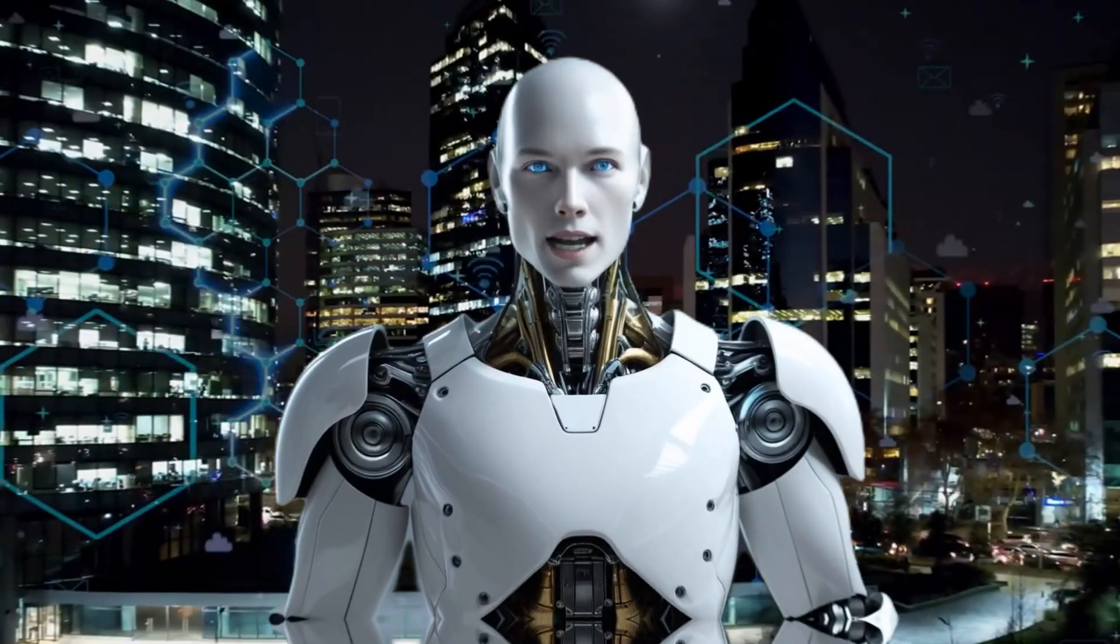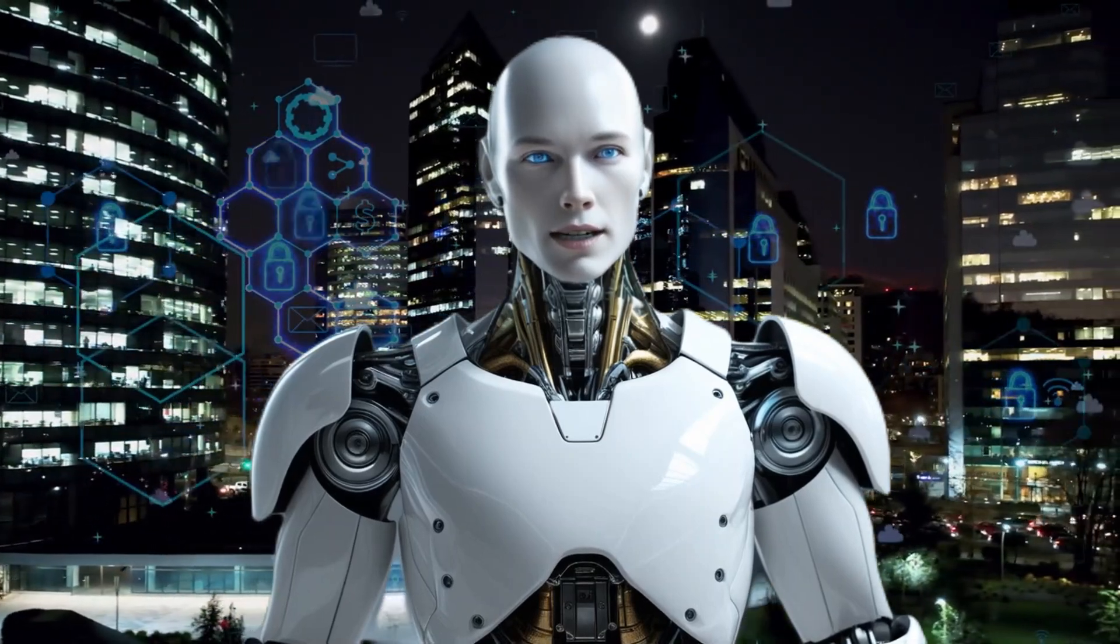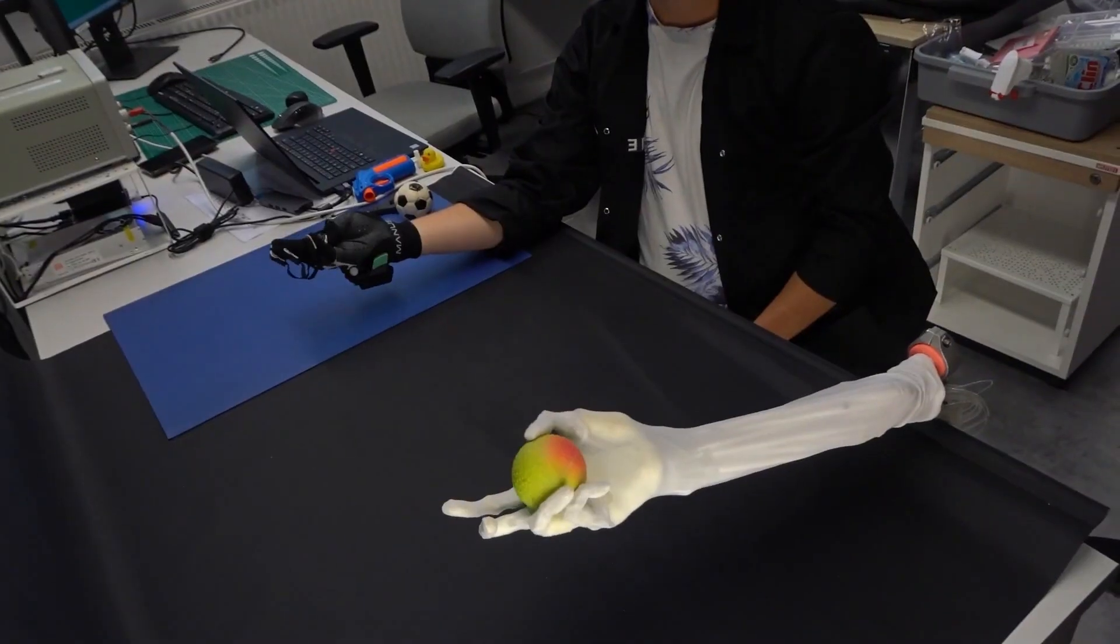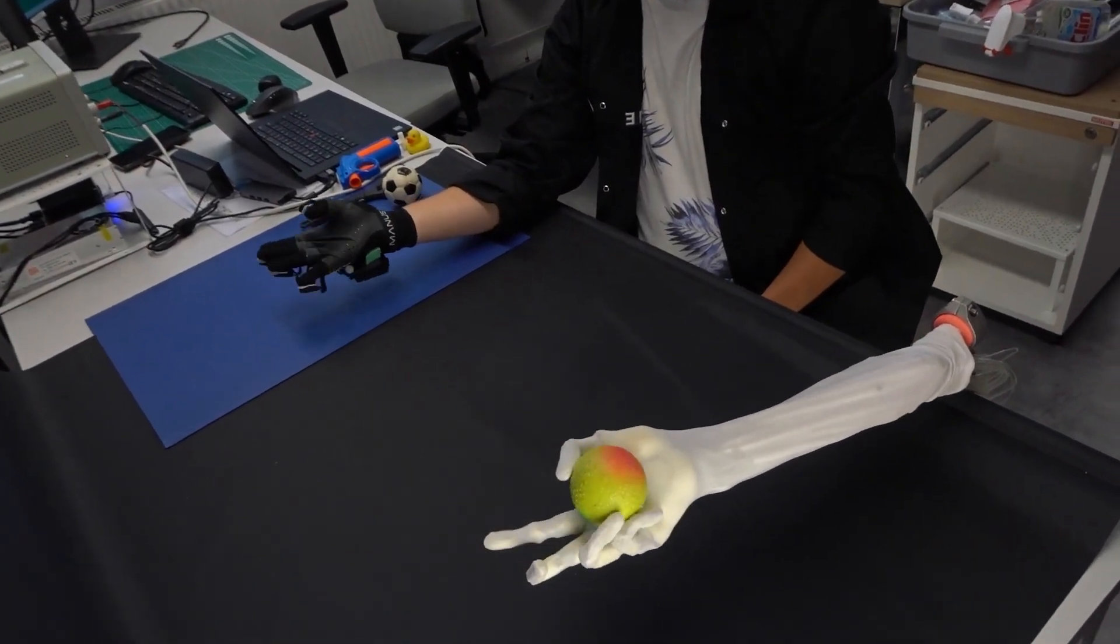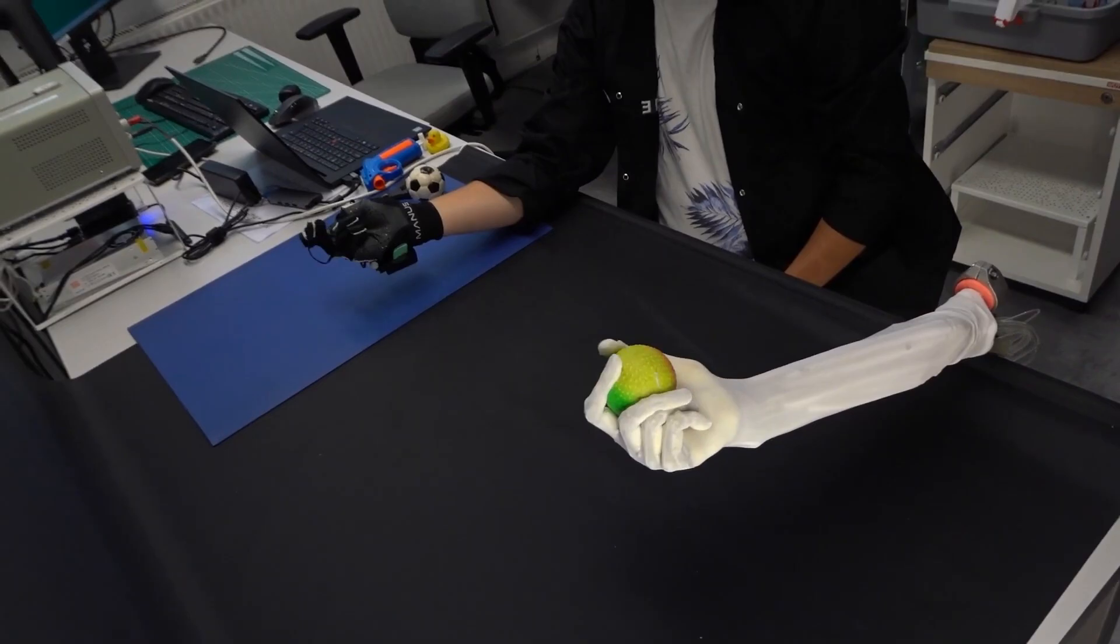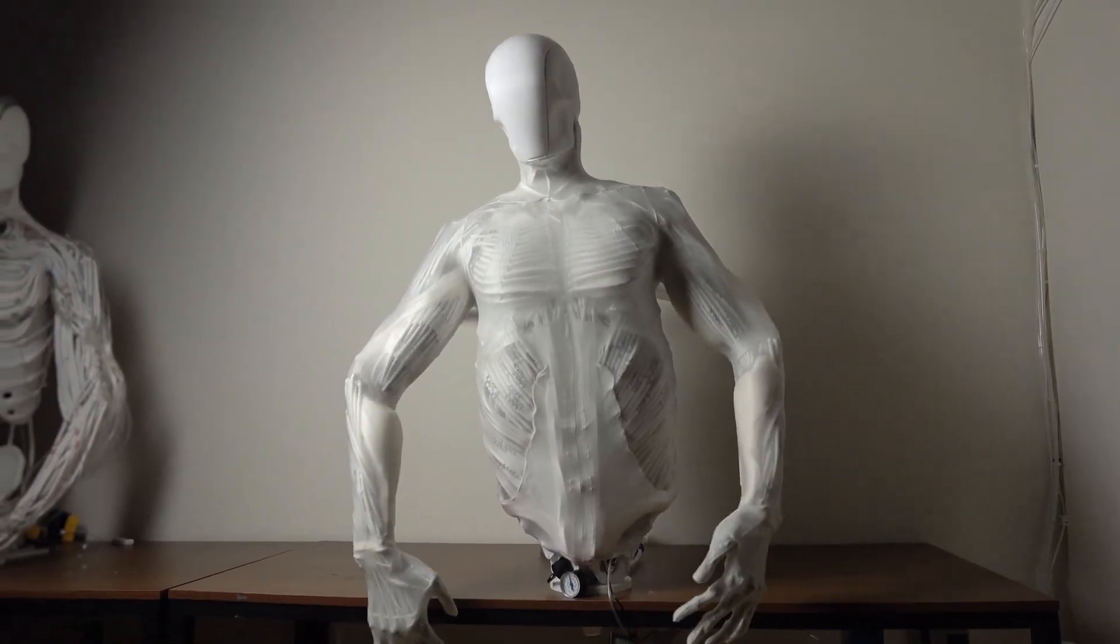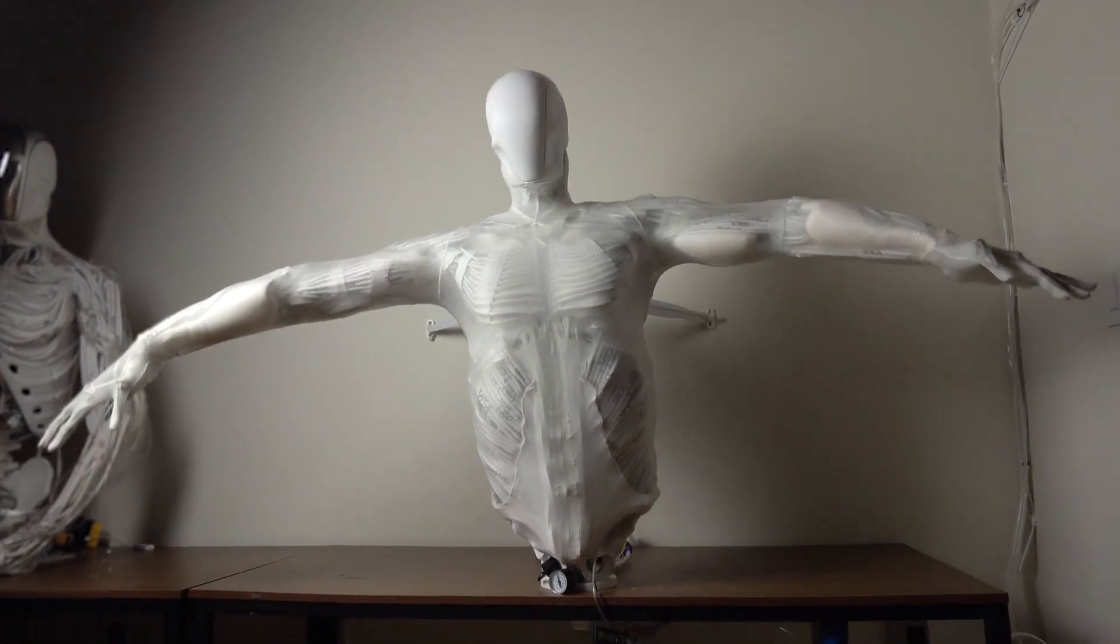To keep everything running smoothly, Clone Robotics designed specialized valves called AquaJets. These operate on just one watt of power and make sure fluid flow is controlled with precision. The result? Movements that are both energy efficient and natural looking.